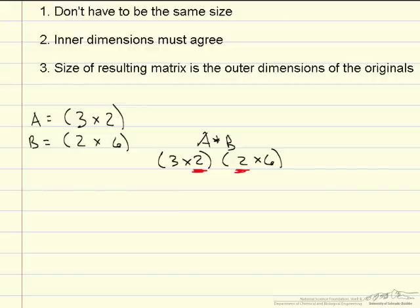Rule number 3 says that the size of the resulting matrix is the outer dimensions of the originals. So in this case our originals are a 3 by 2 and a 2 by 6, meaning our answer matrix is going to be a 3 by 6.